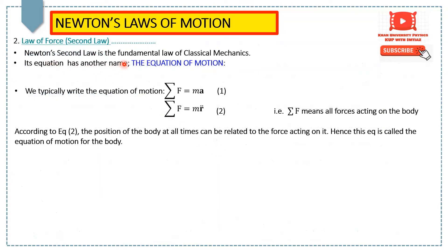Newton's second law, as the fundamental law of classical mechanics, has its equation F = ma known by another name: the equation of motion. We typically write the equation of motion as the summation of all forces acting on the body equals ma. If we write acceleration in terms of position, we write the summation of all forces F = m·r̈, where double dot means the second derivative of r with respect to time. According to this equation, the position of the body at all times can be related to the force acting on it, hence it is called the equation of motion.